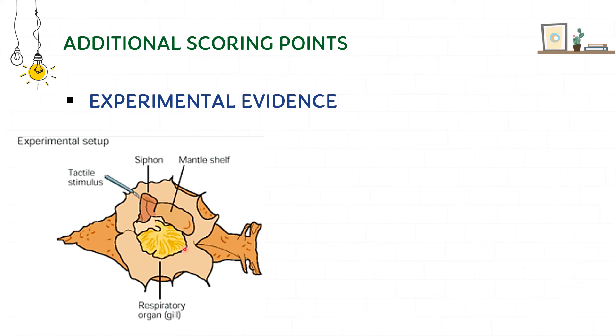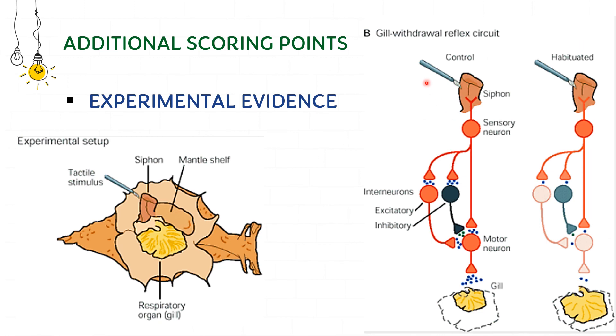Basically what he did was he used to touch the siphon. Normally he saw that when you touched the siphon there will be contraction of the gill. But when he repeatedly touched the siphon, it got habituated and he saw that the contraction of the gill was lesser. So this is how he understood about habituation.